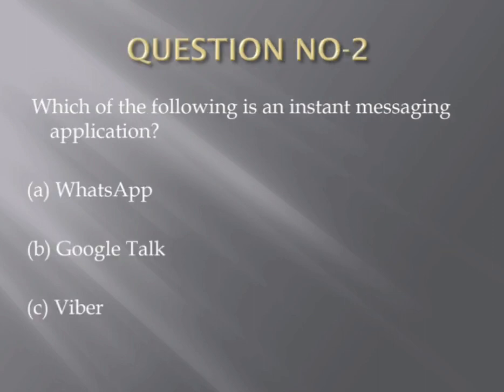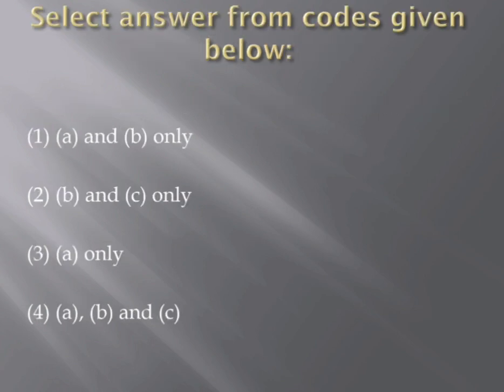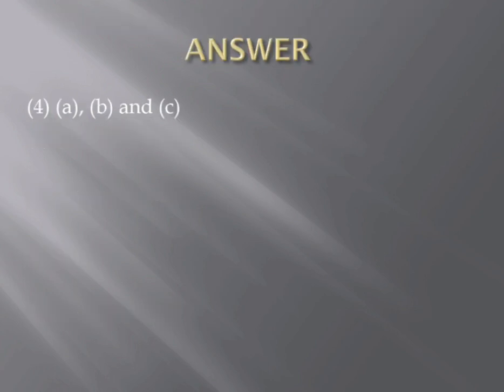Question number two. Which of the following is an instant messaging application? Options: A. WhatsApp, B. Google Talk, C. Viber. Select answer from the choices given below: (1) A and B only, (2) B and C only, (3) A only, (4) A, B and C. The correct answer is A, B and C.